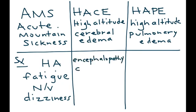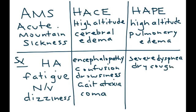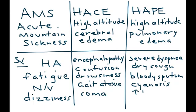For HACE, you'd have encephalopathy, confusion, drowsiness, gait ataxia, and eventually coma. For HAPE, you'd have severe dyspnea, dry cough which can later progress to bloody sputum, cyanosis, tachycardia (increased heart rate), tachypnea (increased respiratory rate), and eventually coma.